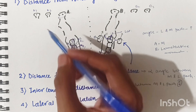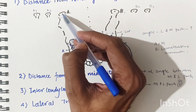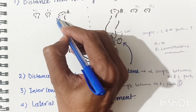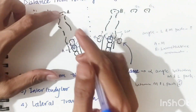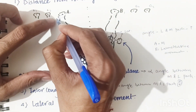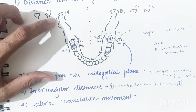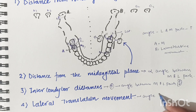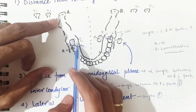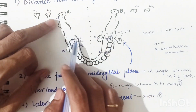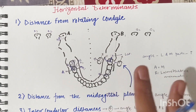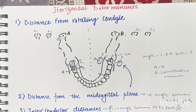The fourth horizontal determinant is lateral translation movement. When the mandible shifts slightly laterally during rotation — that is, the rotating condyle also moves — this increases the distance from the rotating condyle, thereby increasing the angle between mediotrusive and lateral trusive paths. These are all four horizontal determinants of occlusal morphology.